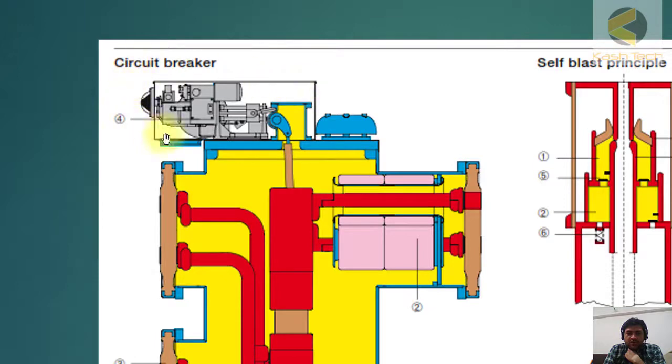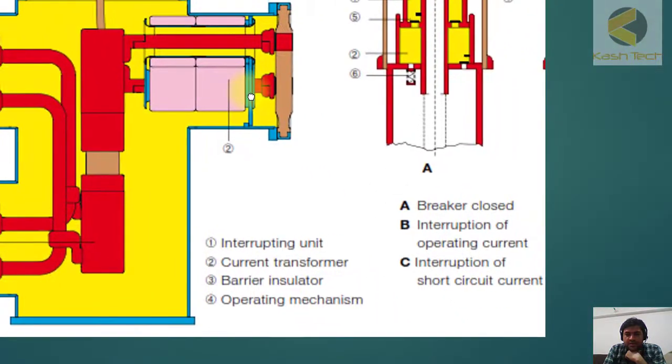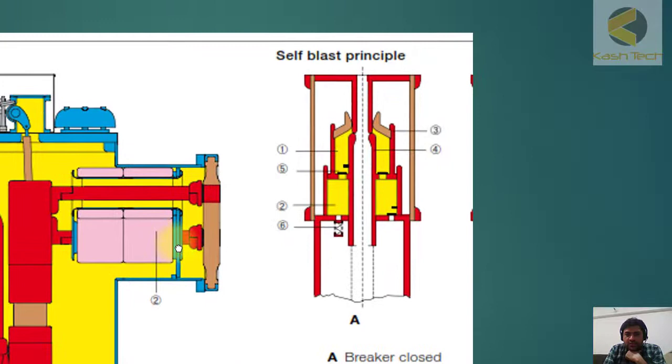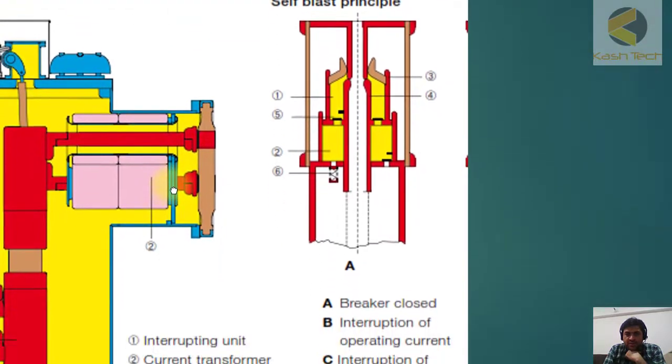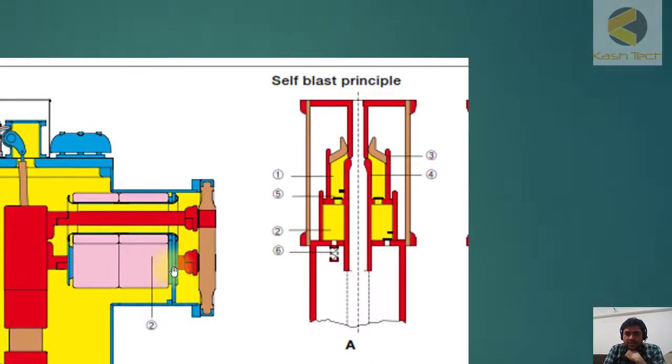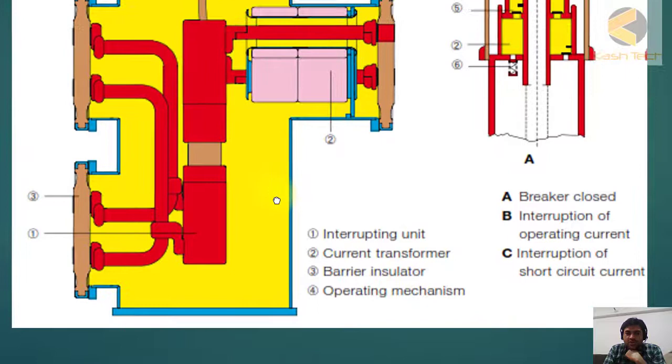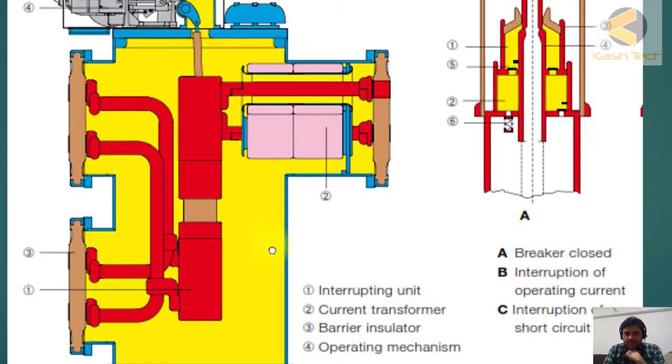Number four is the operating mechanism, which is here, one box installed on the top or on the side of the circuit breaker. Here it is shown a self-blast principle: A is breaker closed, B is interruption of operating current, C is interruption of short circuit current. It means the breaker can be operated on load.